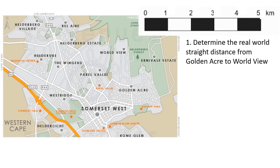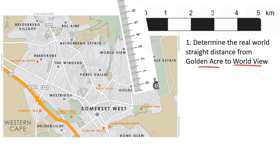Here's our first example. We're going to determine the real world distance from Golden Acre to World View. Here's World View — that little gray dot over there — and Golden Acre is that gray dot over there. So let's go get our ruler. You're not starting your ruler at the right place — but this ruler is a bit weird, it starts at zero over here. So I've got it at Golden Acre and then at World View. If I just read off this length, it's about 3.1 centimeters — that's 3 and then 0.1. So on the map, it is 3.1 centimeters.